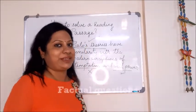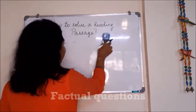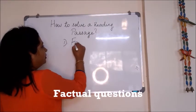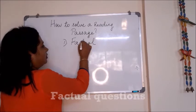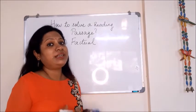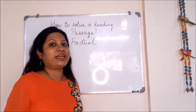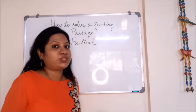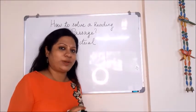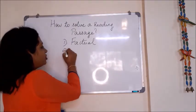Now let's look at the various kinds of questions that can be asked in a reading passage. The first kind is factual questions — questions based on facts. These are the easiest questions in a reading comprehension. They are very direct questions like when, how, who, and which. They can easily be picked up from the passage and written directly.